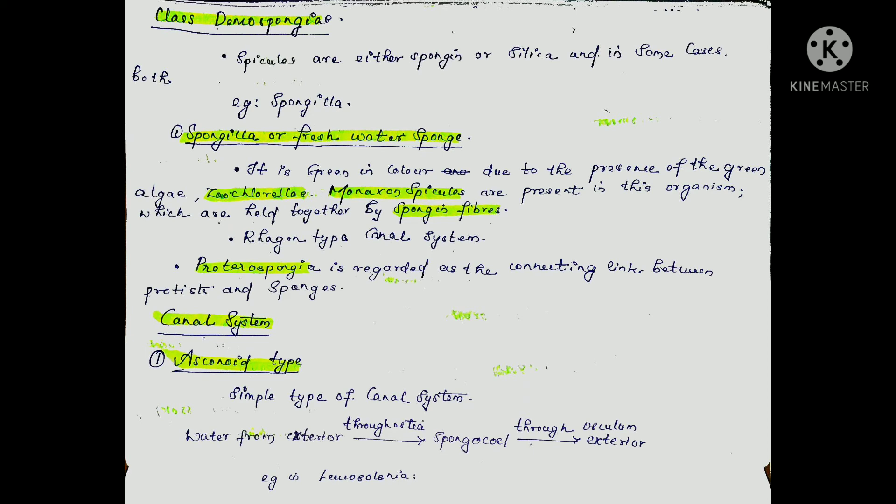An important point about sponge phylogeny: Proterosponge is the connecting link between protists and sponges.